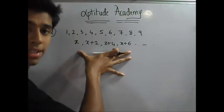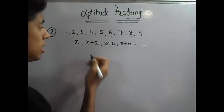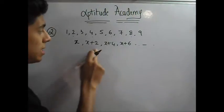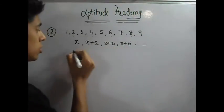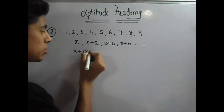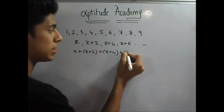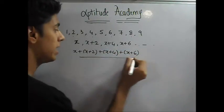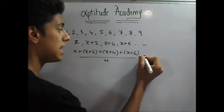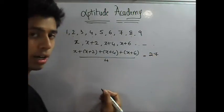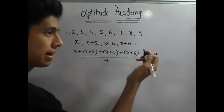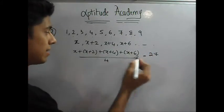Now they said that the average of the first 4 consecutive even numbers is 27. How would you find the average? You would add these 4 values divided by 4. So you have x plus x plus 2 plus x plus 4 plus x plus 6 divided by the number of values, that is 4, is equal to 27. Now take 4 to this side. 27 into 4, that is 108.